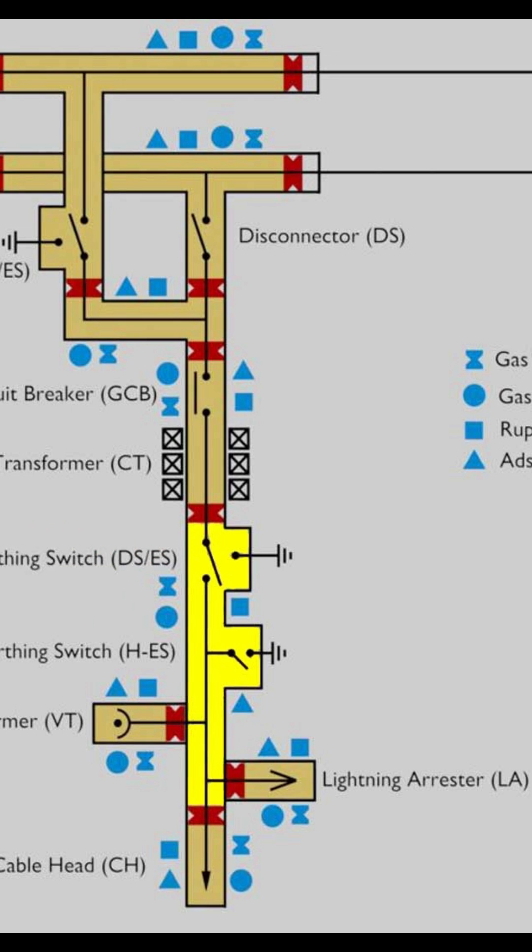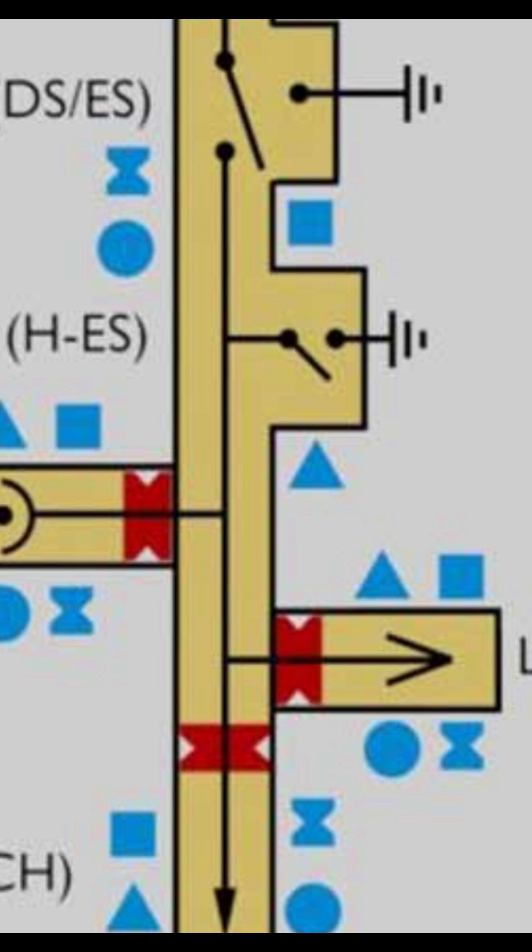Here you see there are two earth switches. There will be another earth switch called a high-speed earth switch. This is required to discharge the trapped charge of the cable very quickly. This is another compartment.